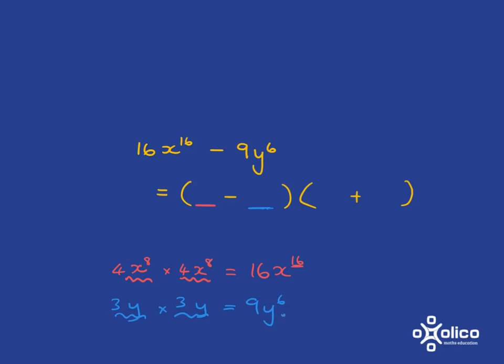Well, in total, I want to have 6 y's multiplied together, so I need 3 here and 3 here, which means the fully factorised form is this.